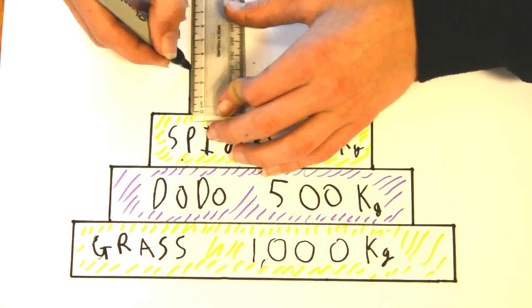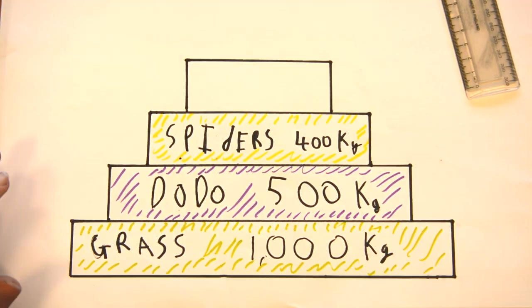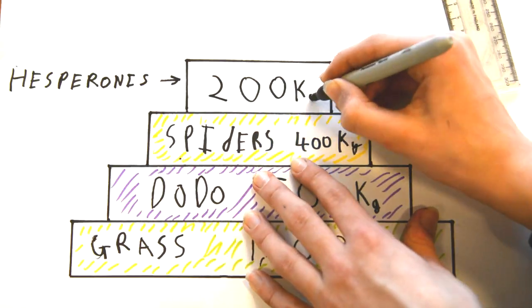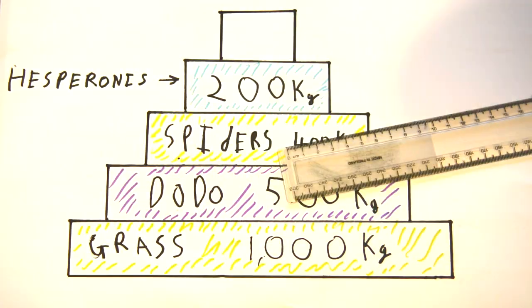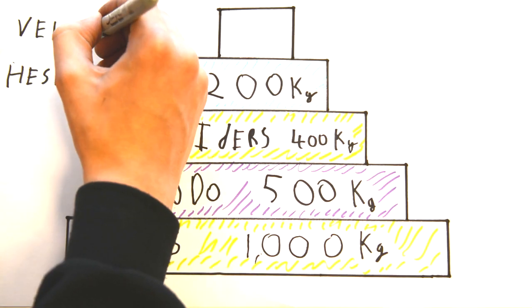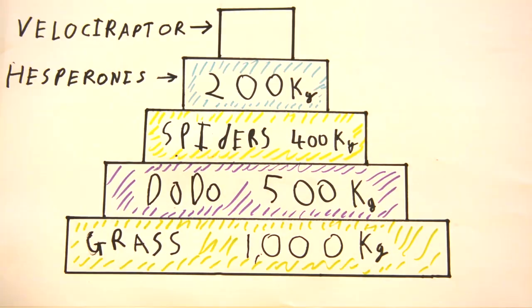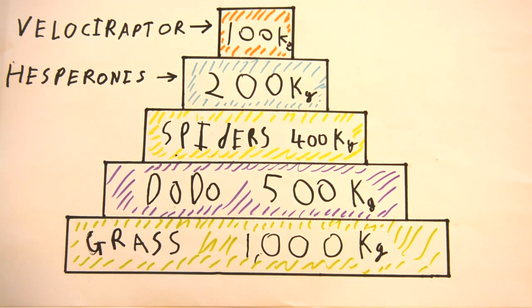Only 200 kilograms of Hesperonis are needed to eat the spiders. Finally, there is one Velociraptor that weighs 100 kilograms that eats all 200 kilograms of the Hesperonis.